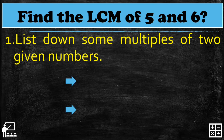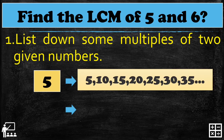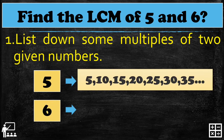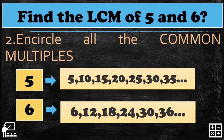Let's try another: find the LCM of 5 and 6. First, list down some multiples of the two given numbers. The multiples of 5 are 5, 10, 15, 20, 25, 30, 35, and so on. The multiples of 6 are 6, 12, 18, 24, 30, 36, and so on. Extending the list gives more numbers.